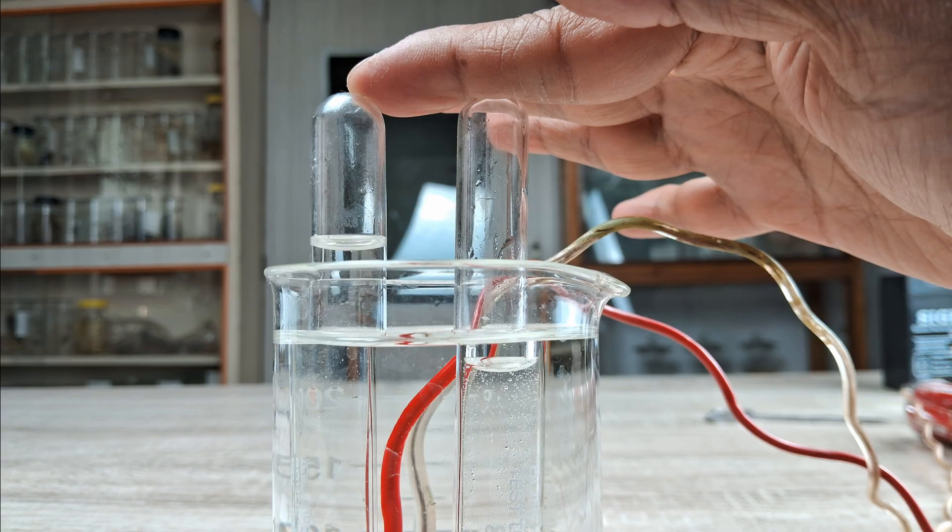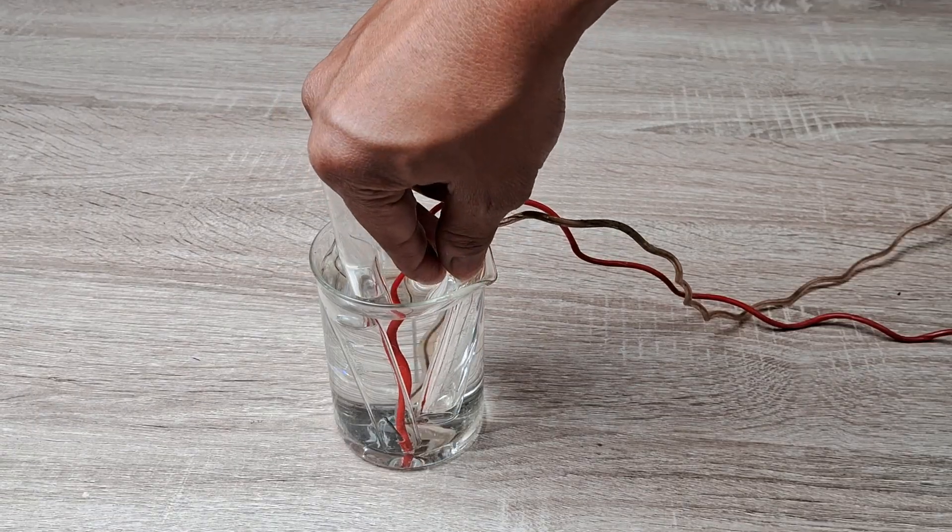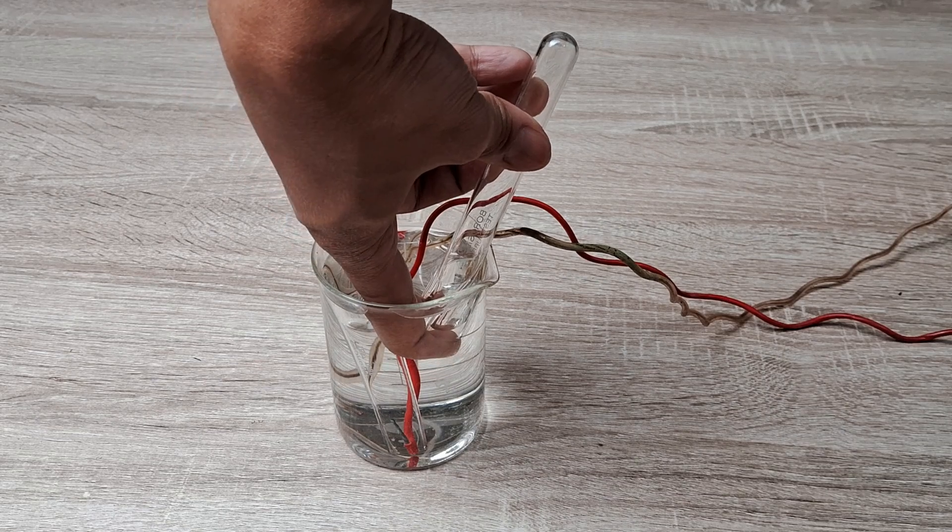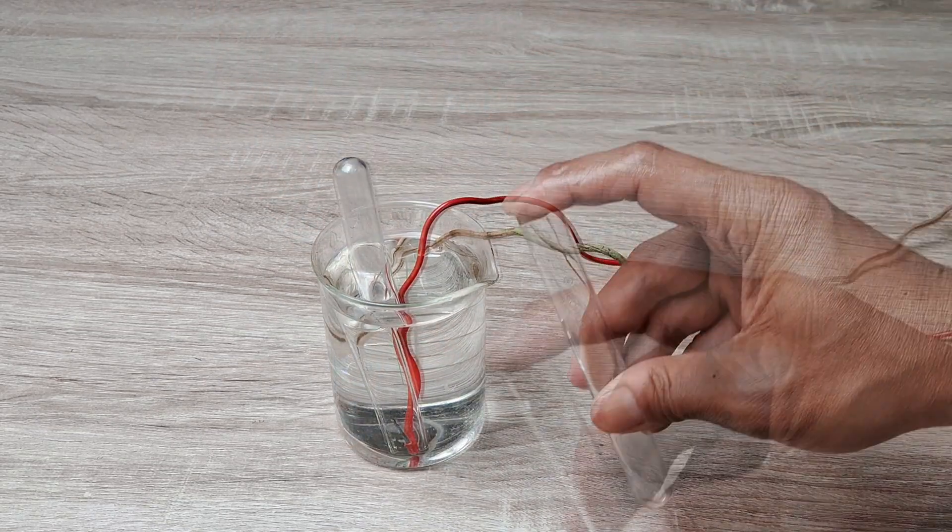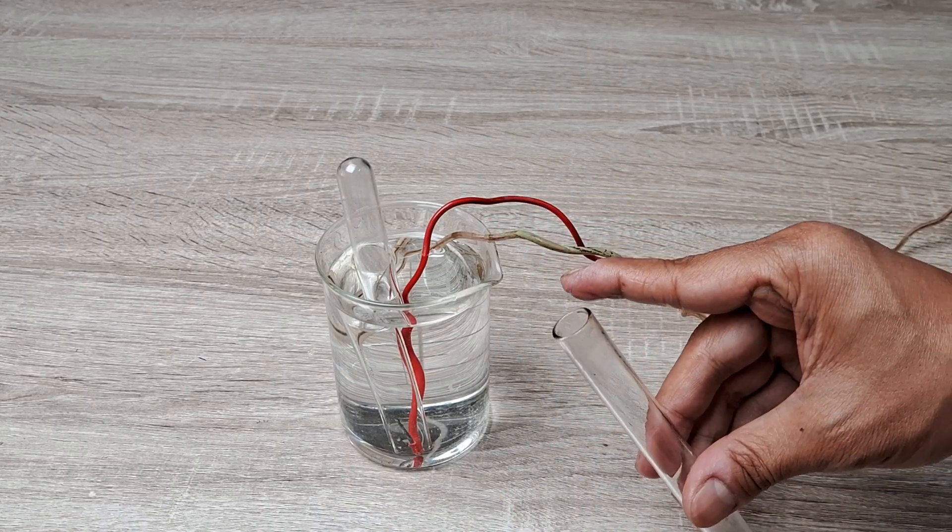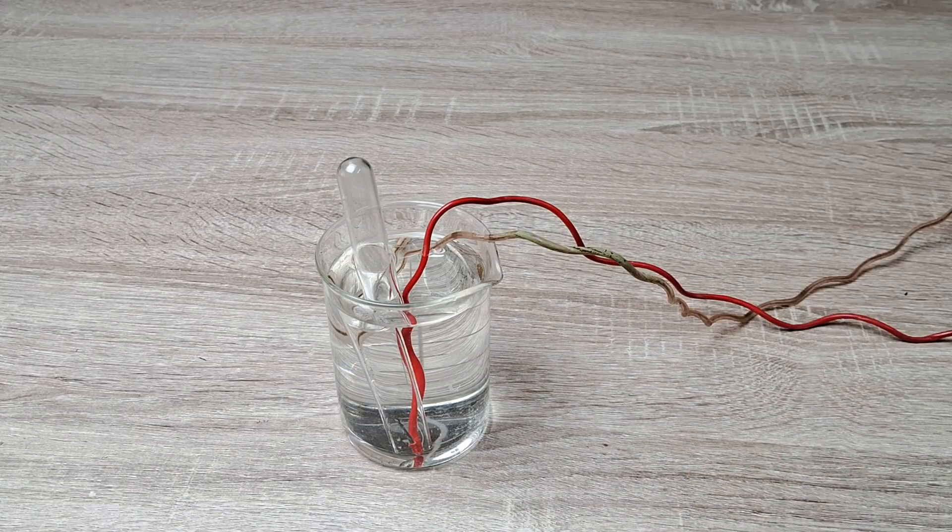Allow both test tubes to be completely filled with the gases. First, remove the tube from the cathode terminal as it fills up first. Plugging the mouth with your thumb, remove the tube from the beaker and test the gas by introducing a burning splint into the mouth of the tube. You will observe that the gas ignites explosively with a characteristic pop sound.